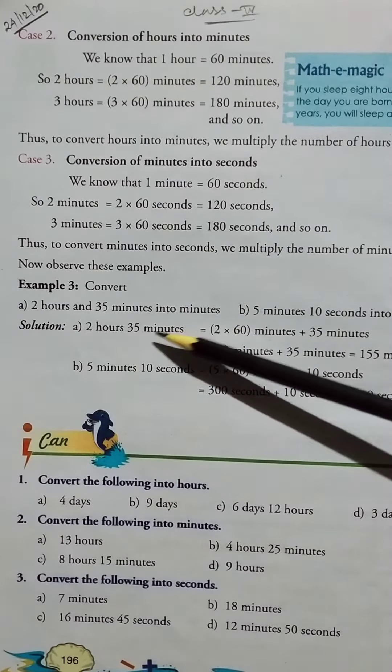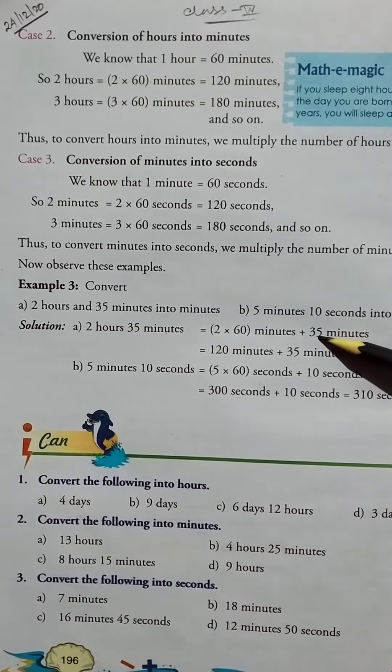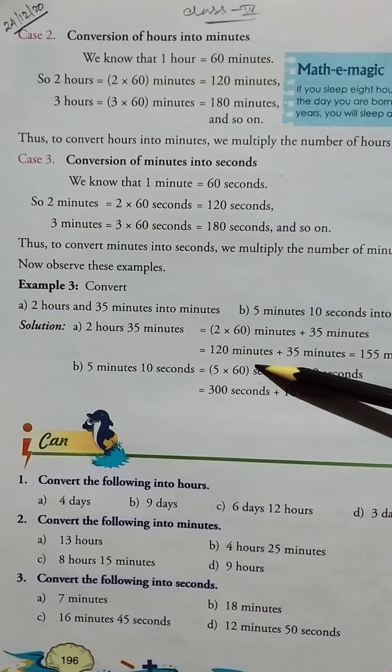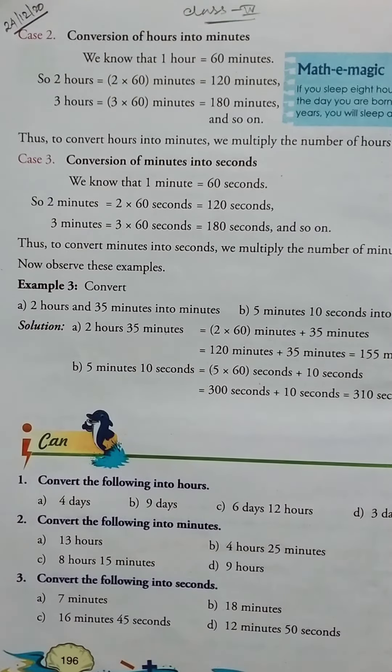That's 120 minutes plus 35 minutes equals 155 minutes. Similarly, for seconds, we convert and add.